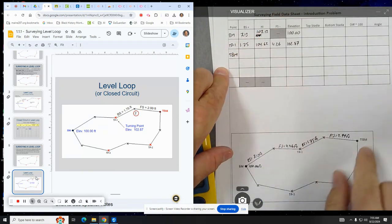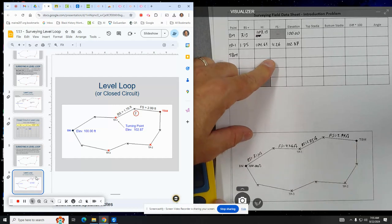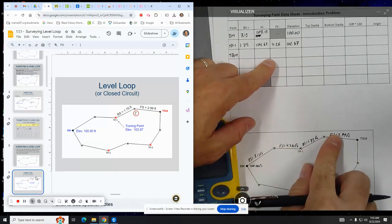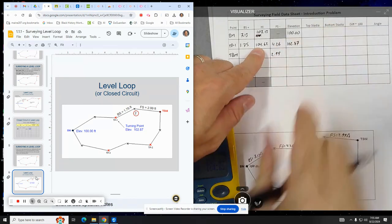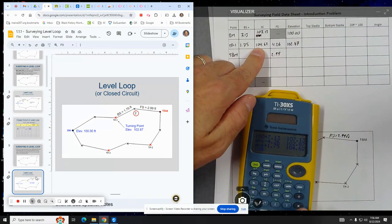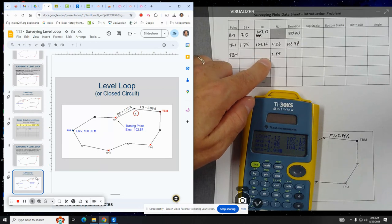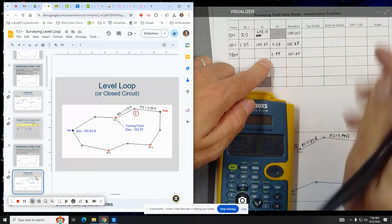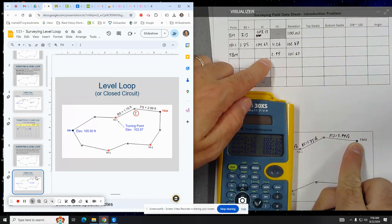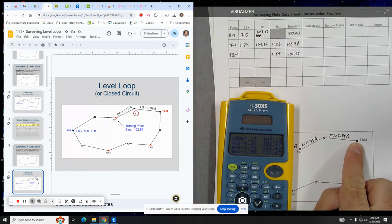And then going to TBM, whatever that is, we are going to take the foresight of 2.99 and subtract 104.62. So minus 2.99, hit enter. So we get 101.63. So the elevation of that point right there is 101.63.